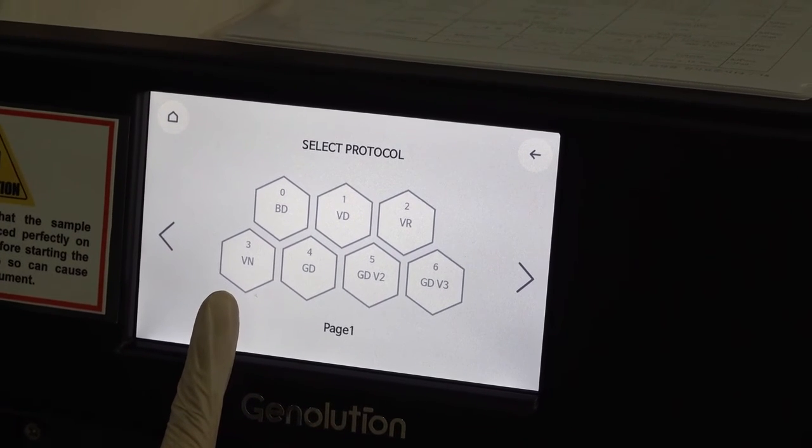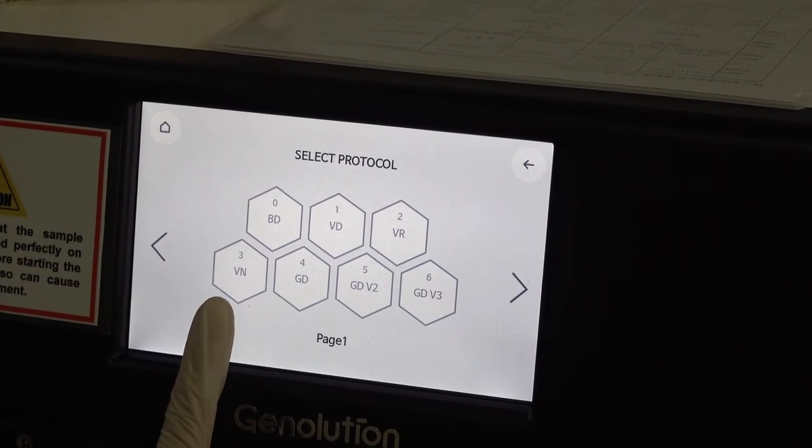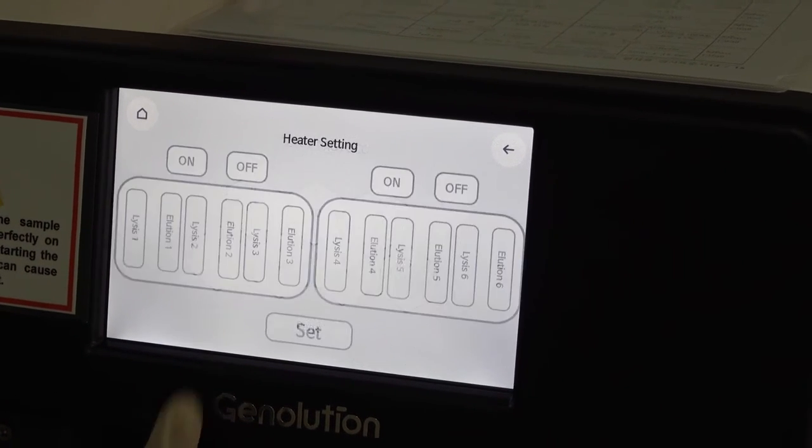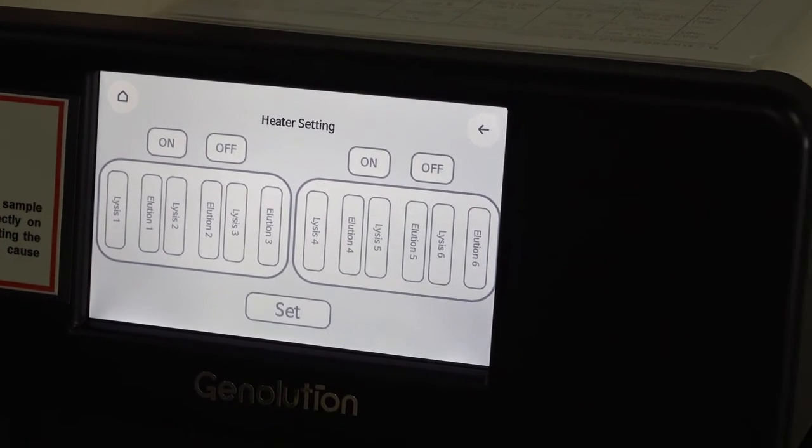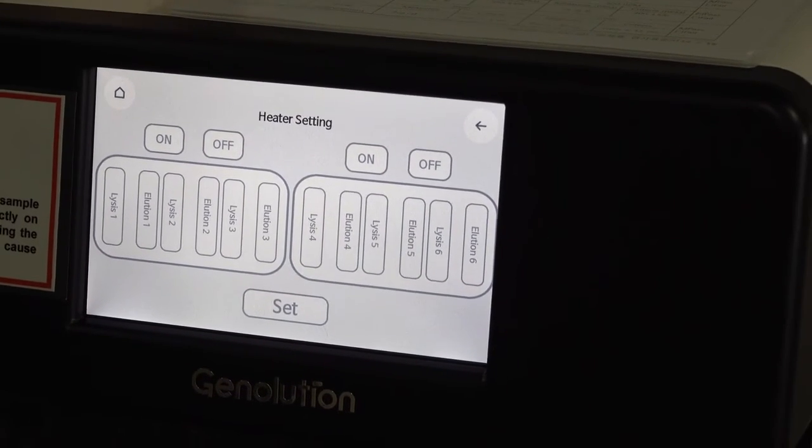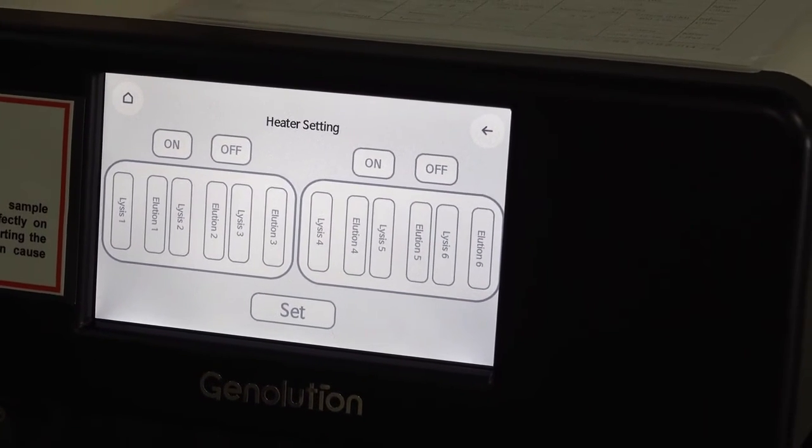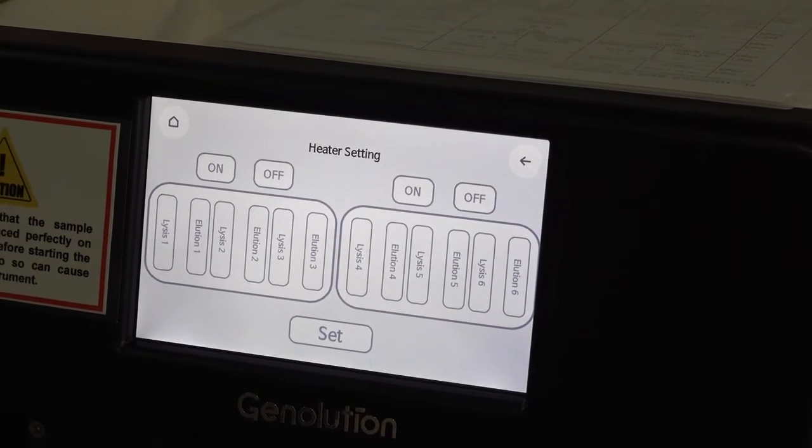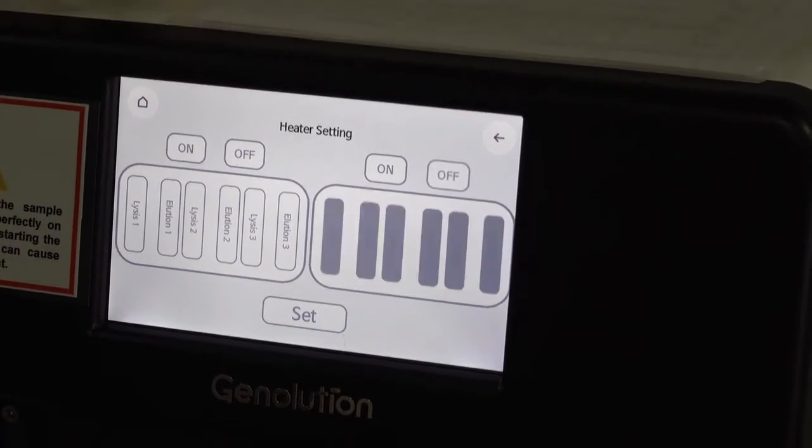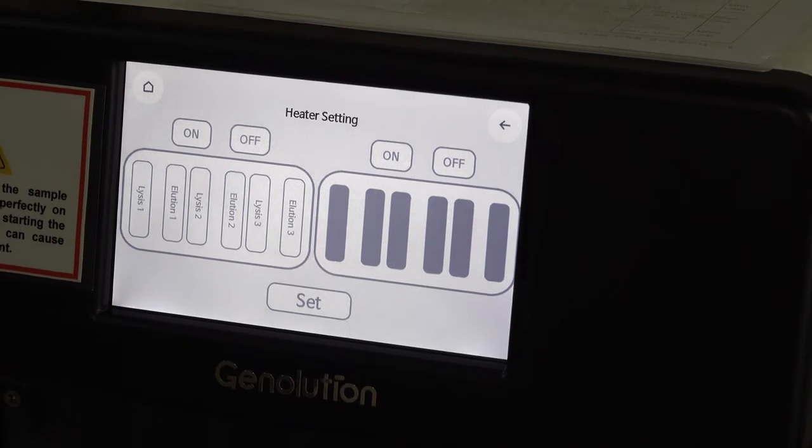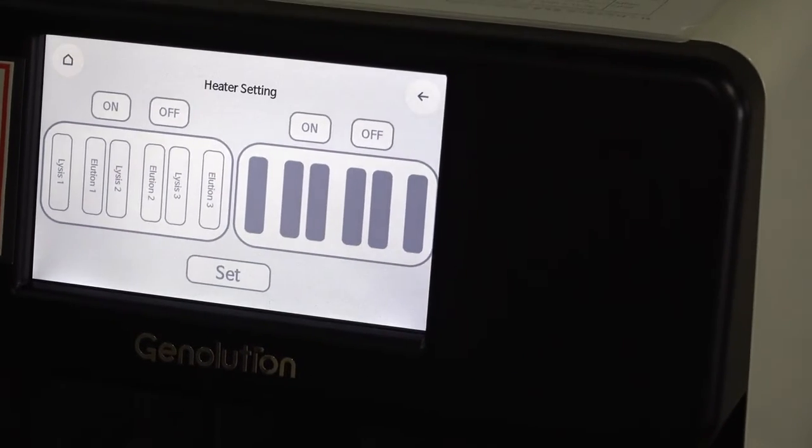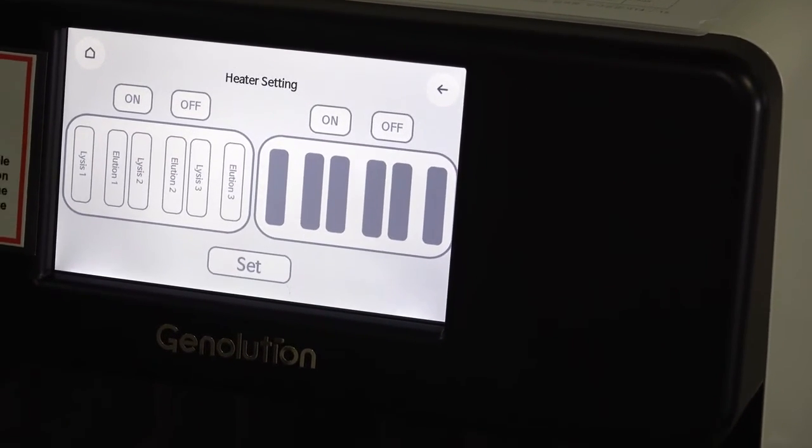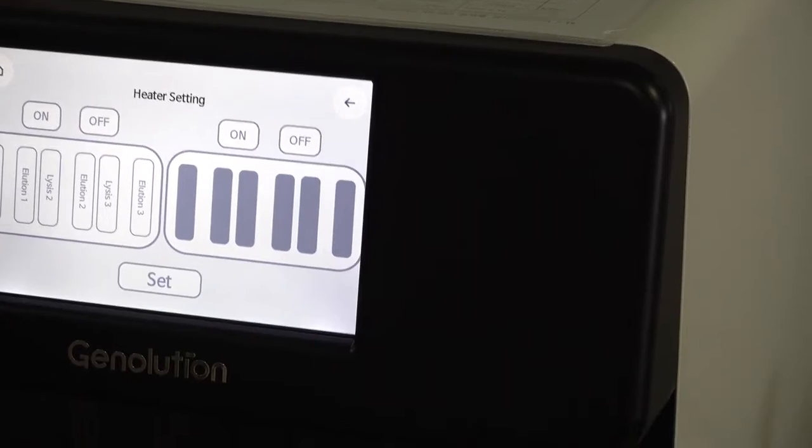In this case, we are going to select for viral nucleic acid. So that is 3. Select 3. The machine will ask you whether you need to heat up the blocks. If you have installed two blocks, please set both to ON. If you select only one block, you may select only one block as ON and the other one as OFF. When it is a grey symbol, it means that the block is OFF. Now the instrument has been set and is ready for operation.